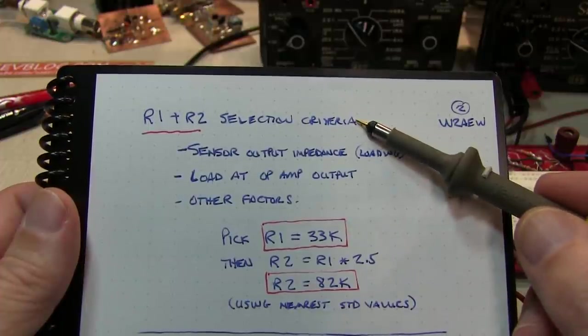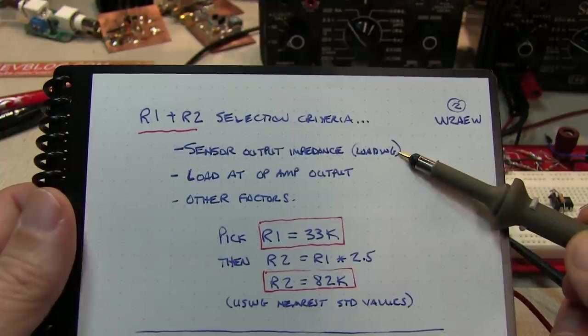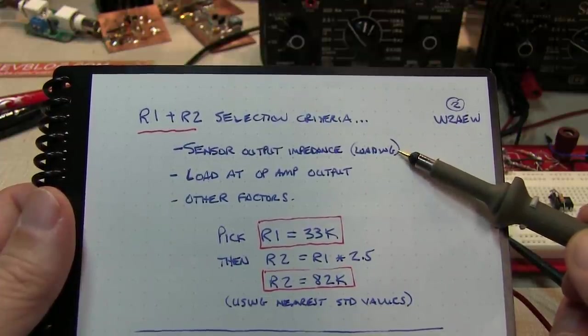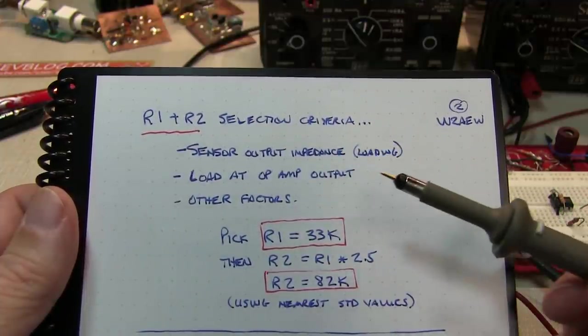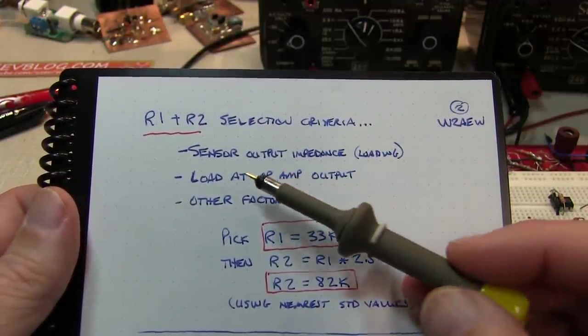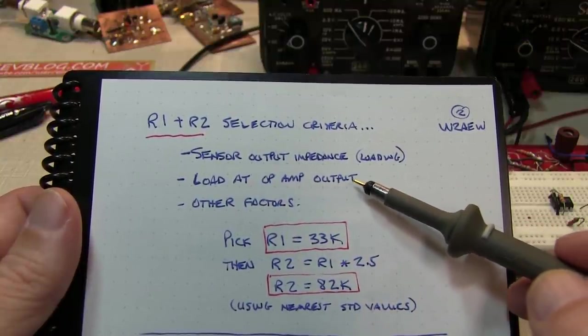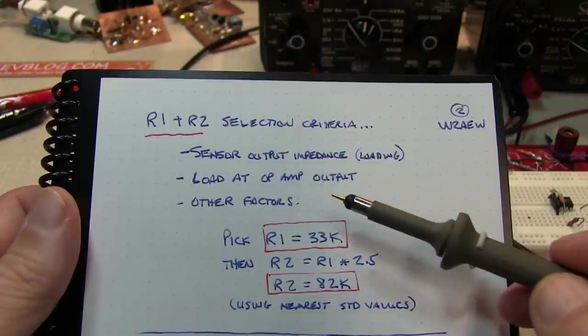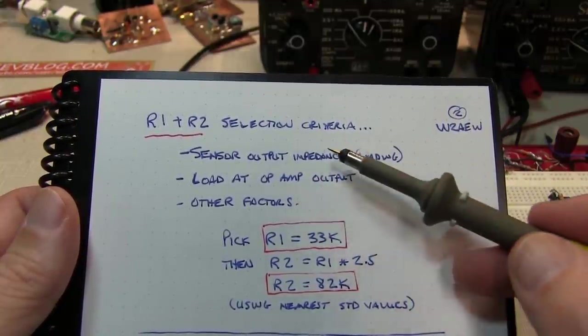Let's look at the selection criteria for R1 and R2. One thing we want to consider is the output impedance of the sensor. In our case, the sensor output impedance is fairly low, so we don't have to worry about R1 loading it down too much. We also might want to take a look at the load at the op-amp output. How much current does the output have to drive through R2 to close that loop? Other factors may be things like power dissipation.